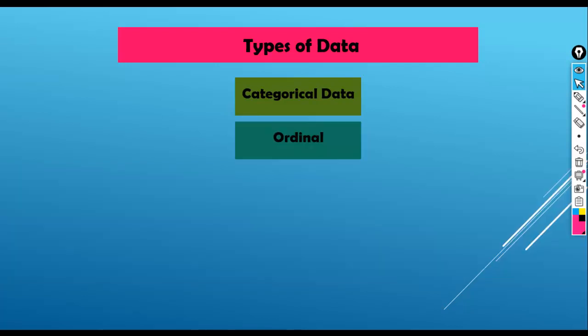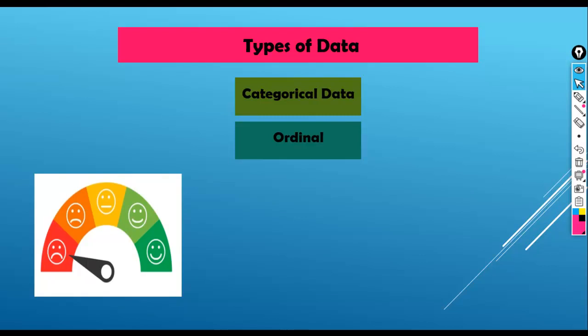Now next, ordinal data. Ordinal data is a type of categorical data that has inherent order or ranking. Ordinal data can be ranked or ordered. Some examples of ordinal data include a person's level of satisfaction with a product or service: very satisfied, satisfied, neutral, dissatisfied, etc.